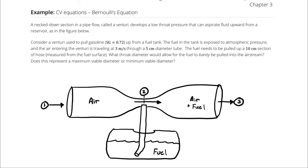A necked-down section in a pipe flow, called a venturi, develops a low throat pressure that can aspirate fluid upward from a reservoir as shown in the figure below. Consider a venturi used to pull gasoline, with a specific gravity of 0.72, up from a fuel tank. The fuel in the tank is exposed to atmospheric pressure, and the air entering the venturi is traveling at 3 meters per second through a 5 centimeter diameter tube. The fuel needs to be pulled up a 10 centimeter section of hose, measured from the fuel surface.